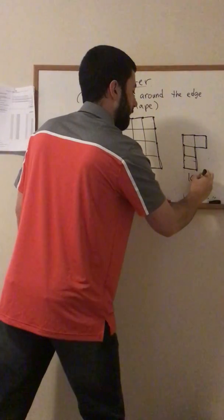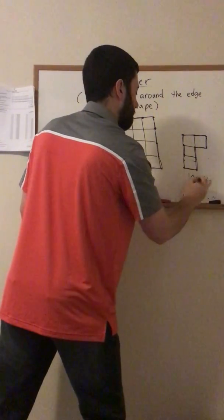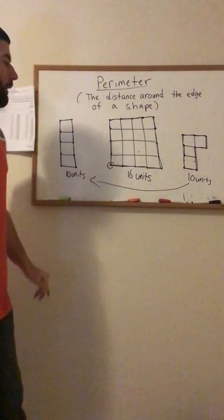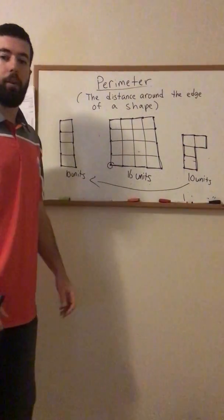So this one has 10 units as well and it's the same as this one. So two different shapes can have the same perimeter even though they look different.